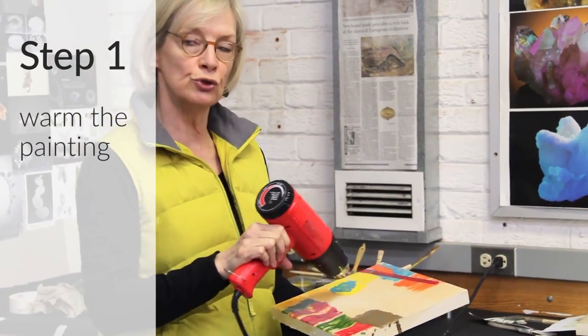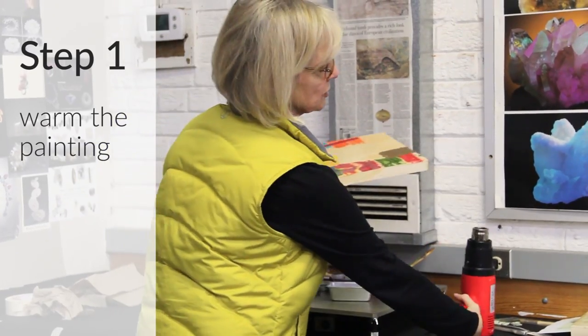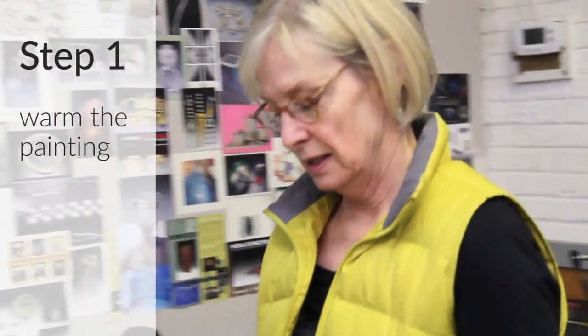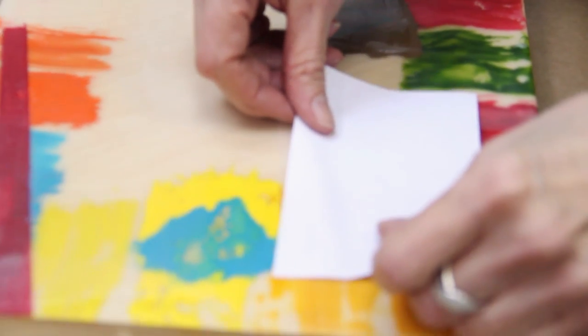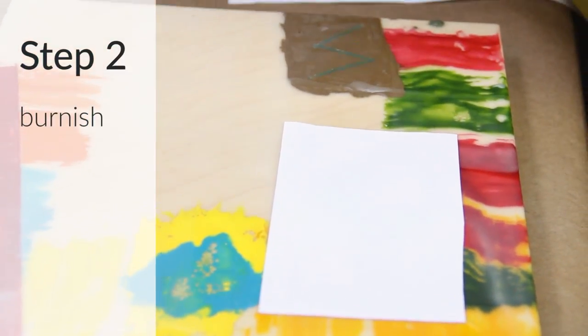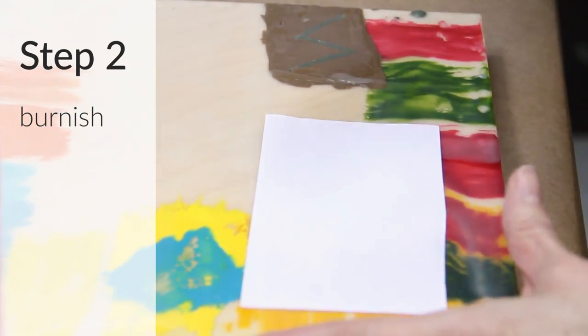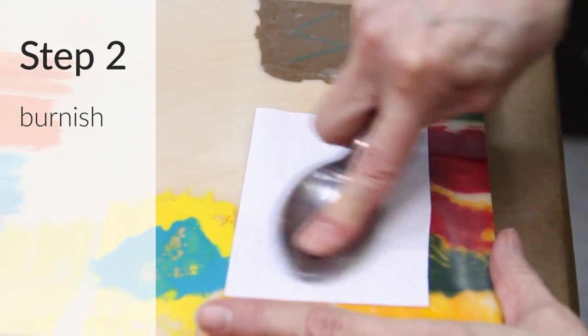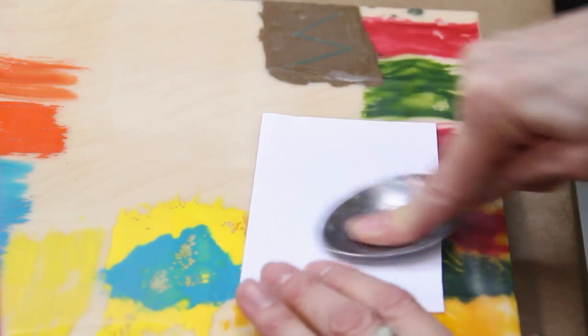It's not so much fusing as it's just heating it. So you want it to be lukewarm. So you put it face down and you burnish it. I have a couple spoons here that you can burnish. So I just rub, rub, rub.